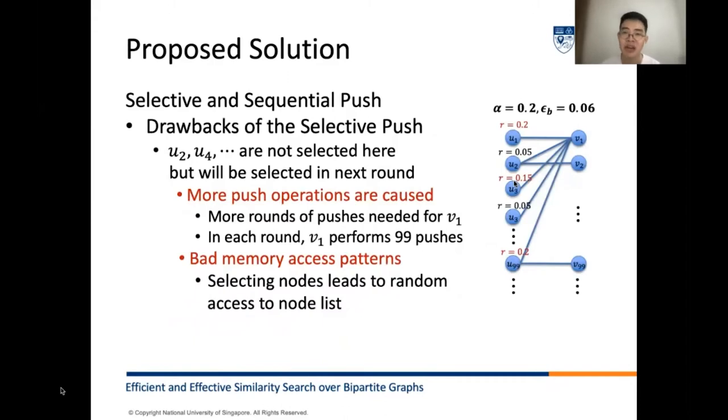First, we give an example to illustrate the drawbacks of the selective push. Recall that selective push only performs pushes at nodes with residuals greater than the error threshold epsilon_b. Here we set epsilon_b to 0.05. First, nodes U2, U4, and other nodes are not selected in this round of push. However, we notice that all these nodes will push their residuals to node V1. After that, V1 will push the total residuals back to these 99 neighbors. The residual at nodes U2 and U4 will be more than 0.05 and be selected at the next round. This means we need more rounds for push.